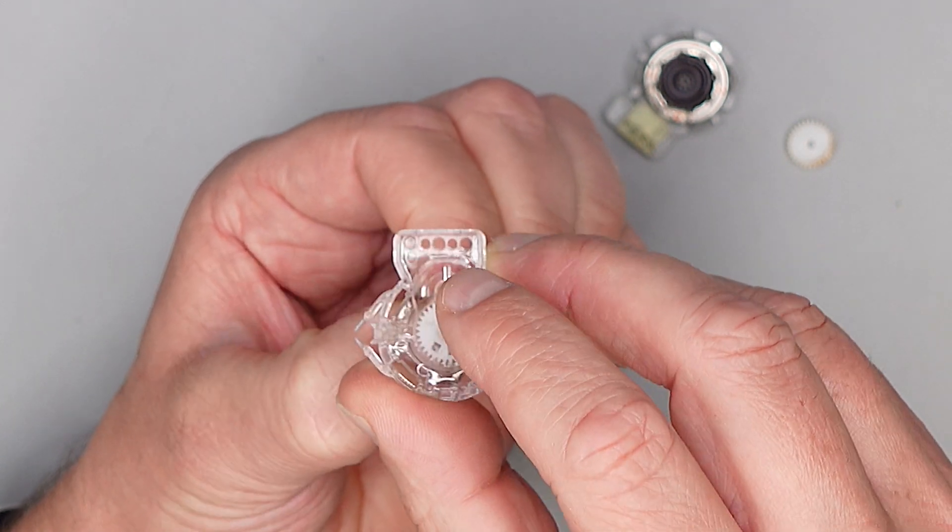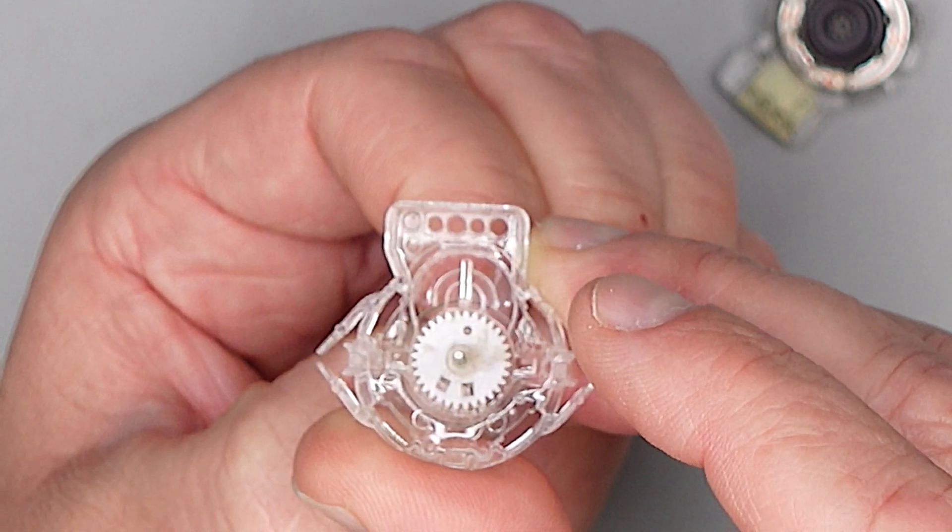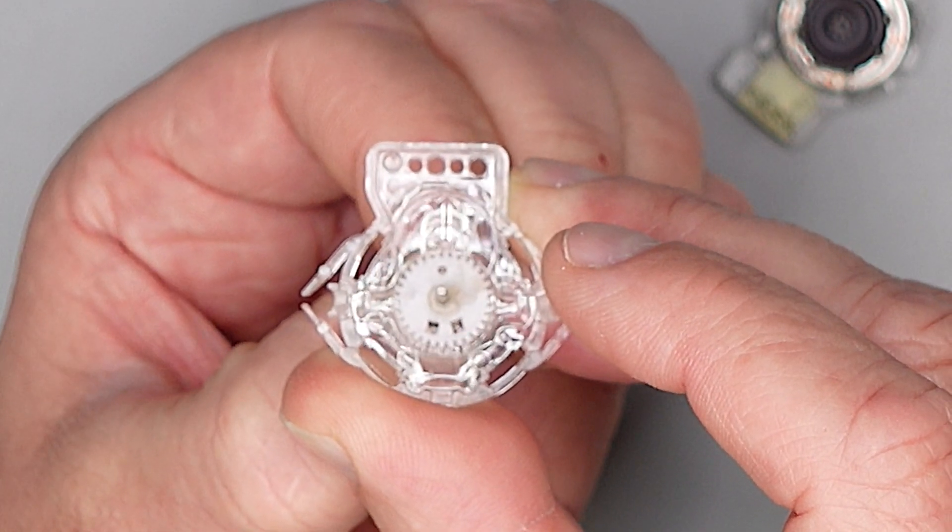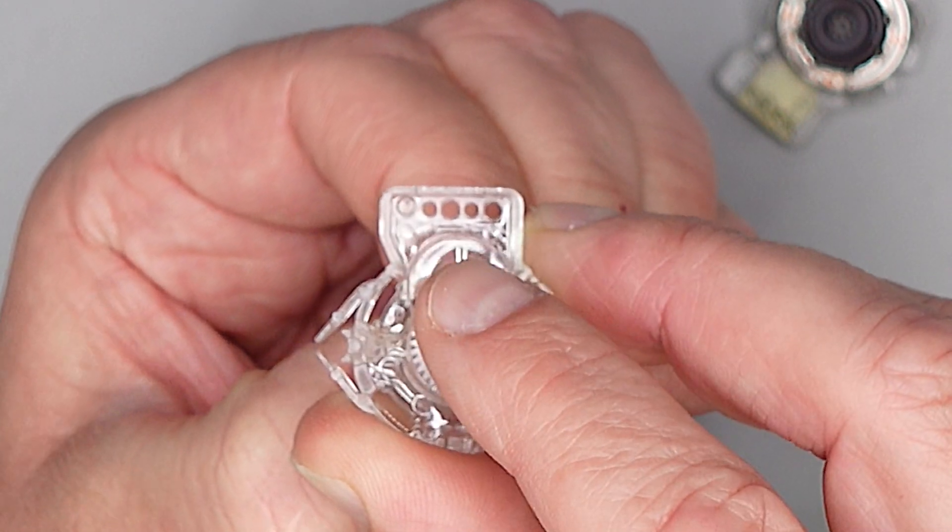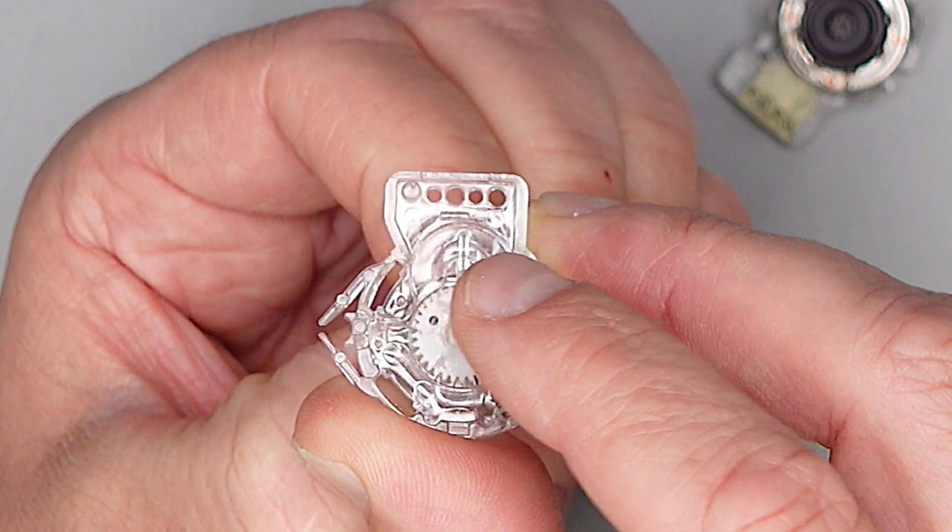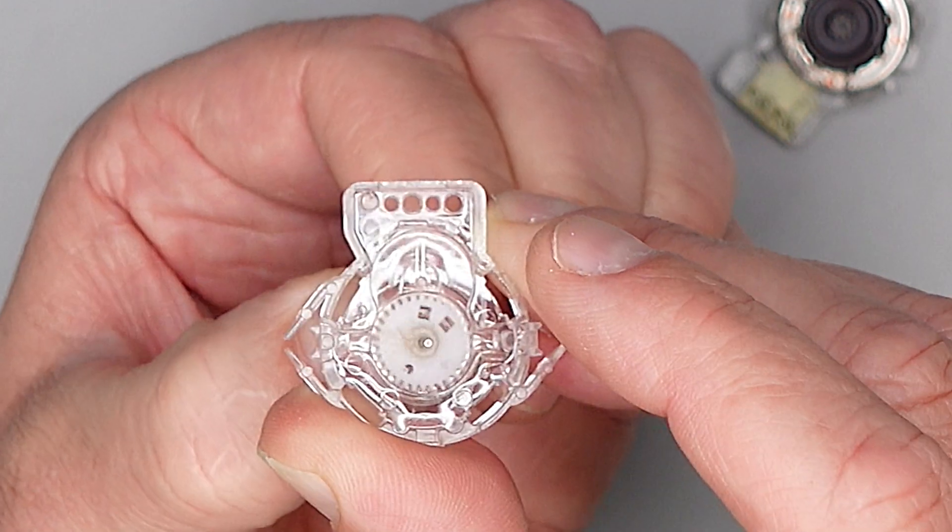Jetzt bleiben wir hier unten an dieser Nase hängen, und da müssen wir jetzt ganz vorsichtig die Feder ein Stück hochdrücken über die Nase rüber und wieder runter. Jetzt können wir nicht mehr zurück, jetzt ist die Feder etwas vorgespannt. Ich drehe dann mal noch ein Stückchen mit.